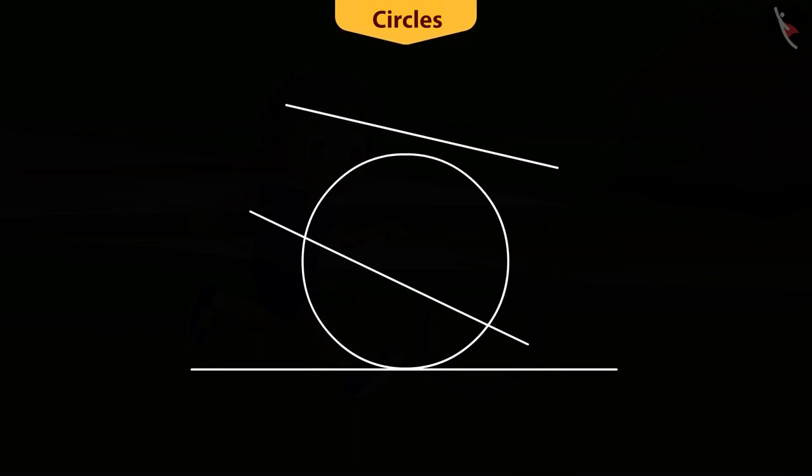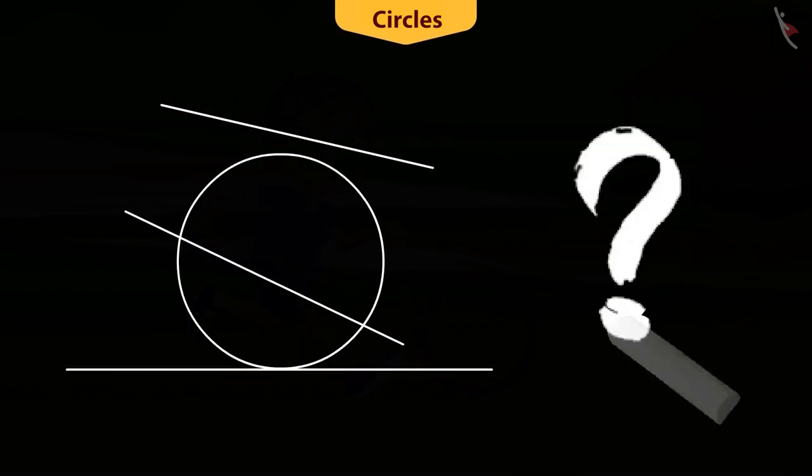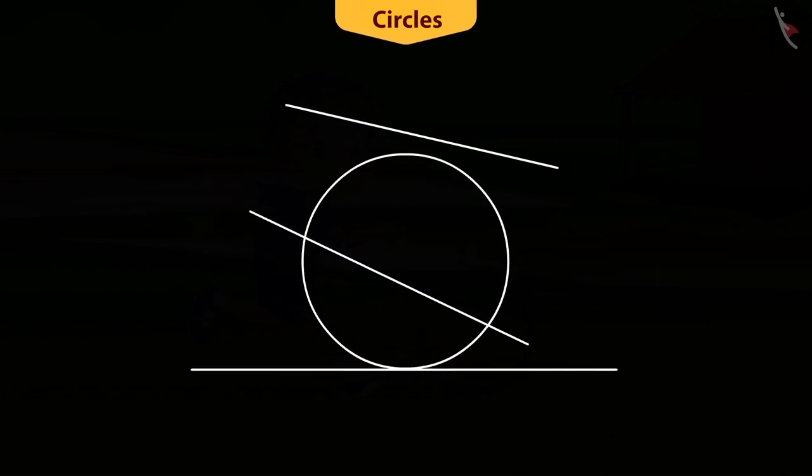Observe this figure. What can you say about the circles and the lines here? There are three possibilities of the arrangements of circle and lines.